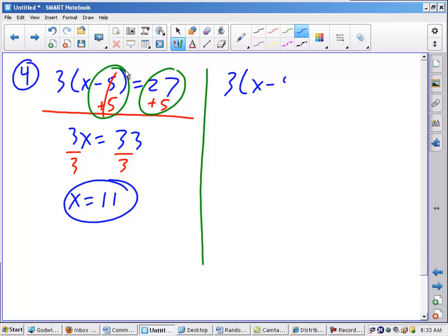So if I rewrite it, 3x minus 5 equals 27. What I need to do is remember my steps and stop jumping ahead. So number one, clear the equation of fractions and decimals. I don't see it. Distribute if necessary. It is necessary. Let's see why.